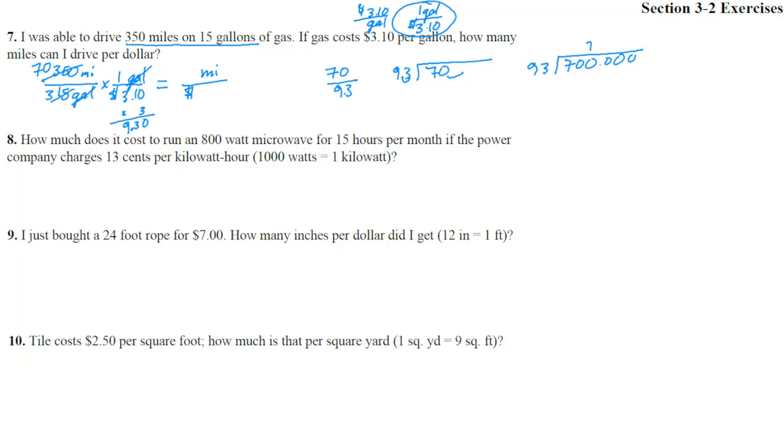9 goes into 70. Let's try 7 times. 7 times 3 is 21, carry a 2. 7 times 9 is 63, plus that 2 is 65. That looks like we got pretty close. Subtract: 10 minus 1 is 9, 9 minus 5 is 4, 6 minus 6 is 0.